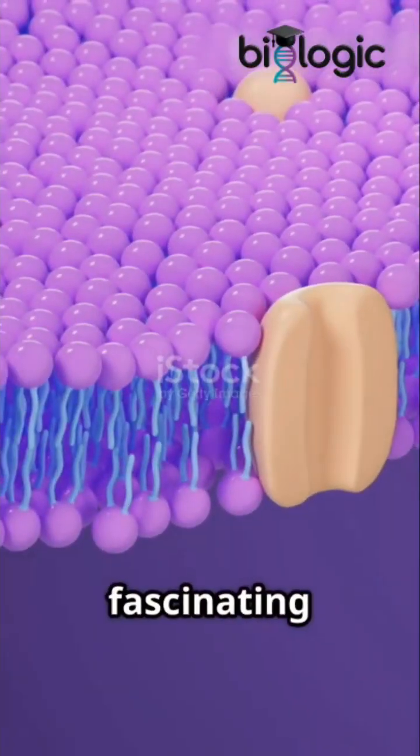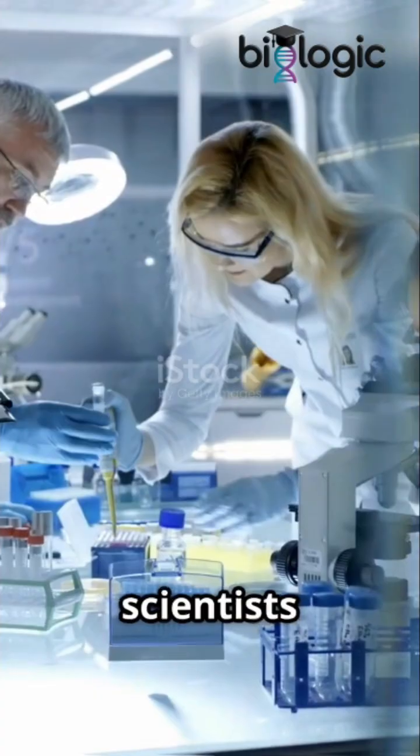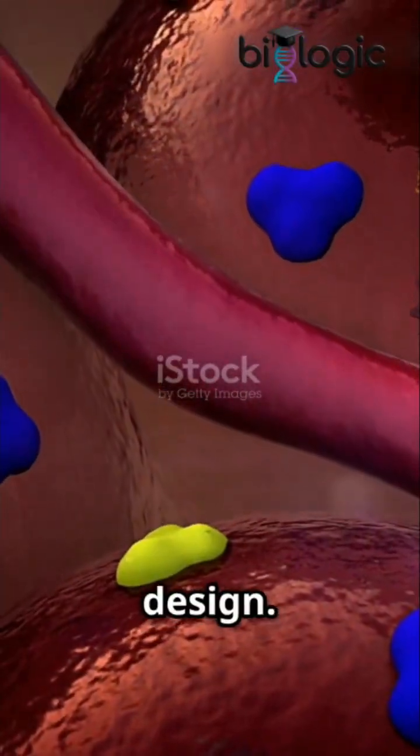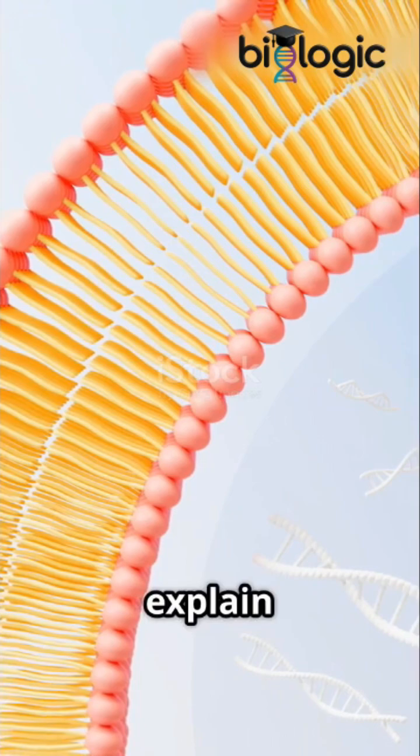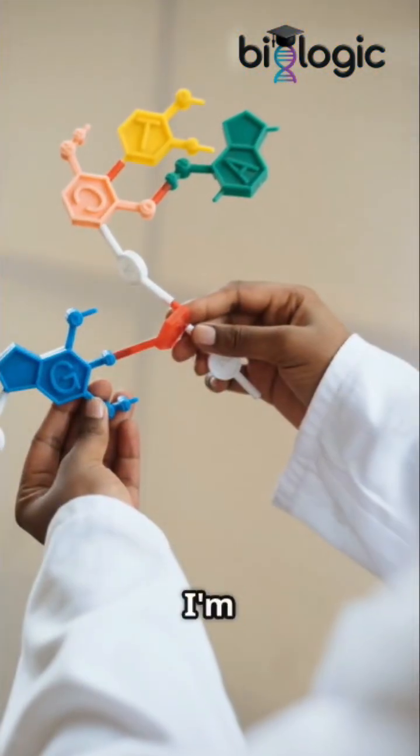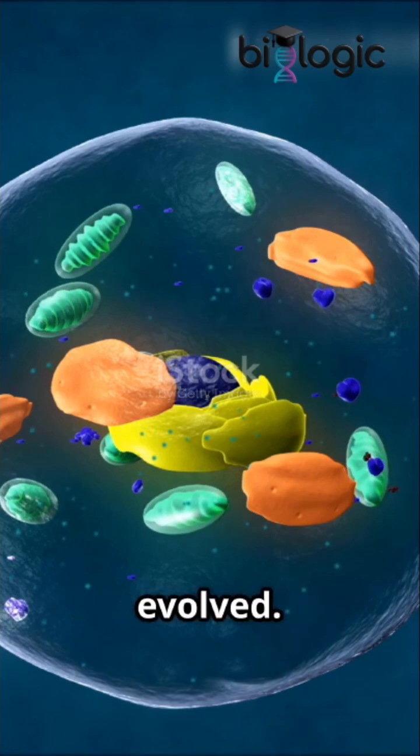Every living cell is wrapped in a fascinating structure, the cell membrane. But scientists didn't always know its exact design. Over the years, several models have been proposed to explain its structure. Today, I'm diving into the key models of the cell membrane and how our understanding evolved.